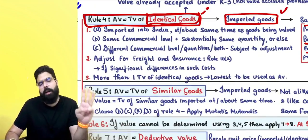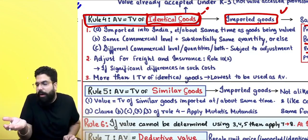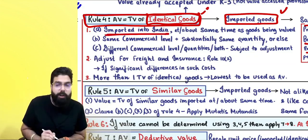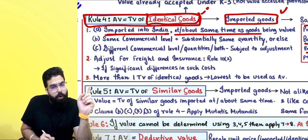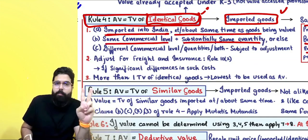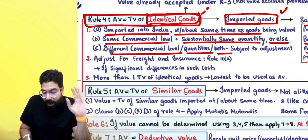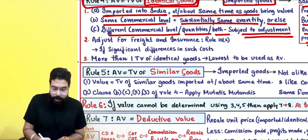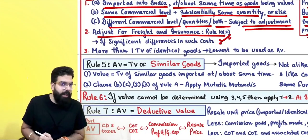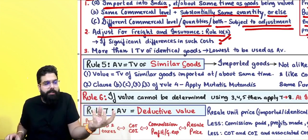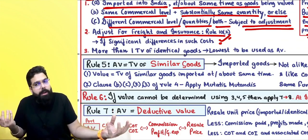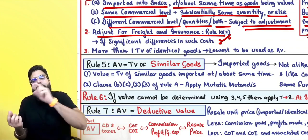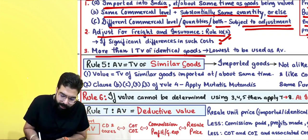The officer takes the assessable value of identical goods imported into India at or about the same time, at the same commercial level and substantially same quantity. A different commercial level or quantity is also fine but subject to adjustment. Adjustment is also made for freight and insurance if there is a significant difference — for example, identical goods imported in Chennai but your goods were imported in Goa. If more than one transaction value is found, the lowest is taken.